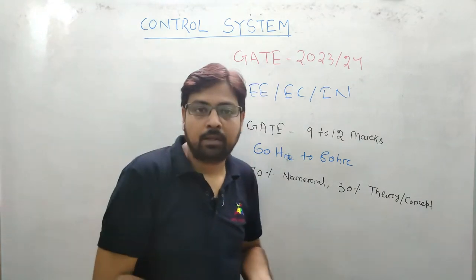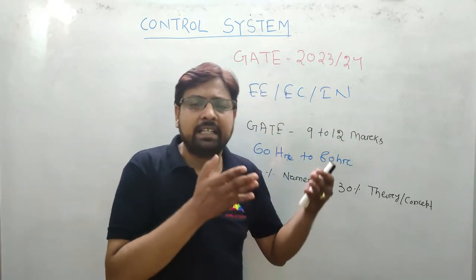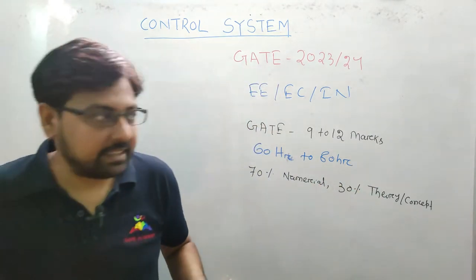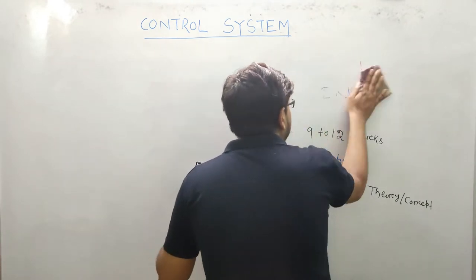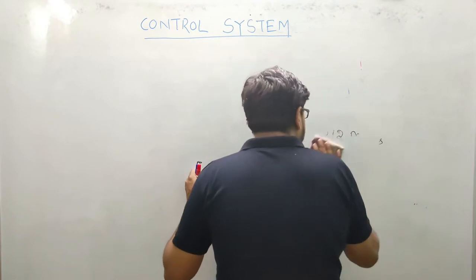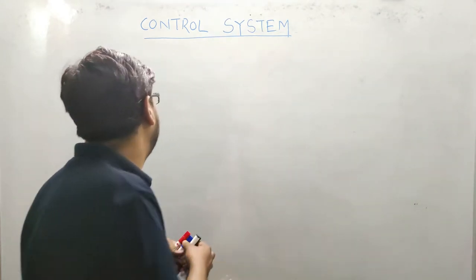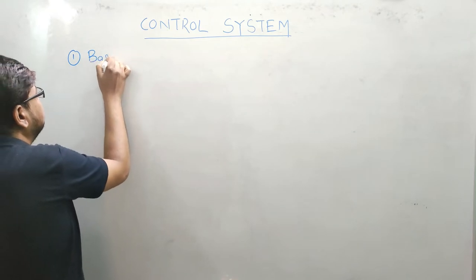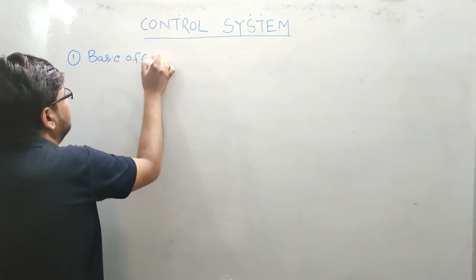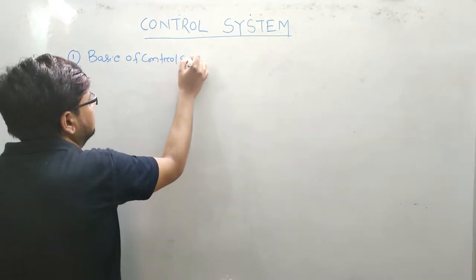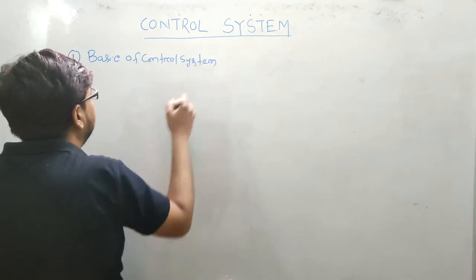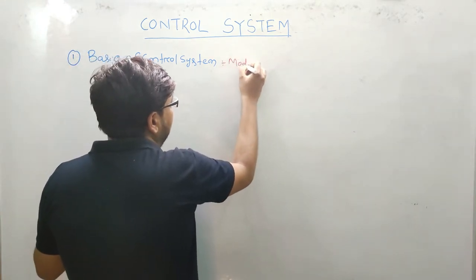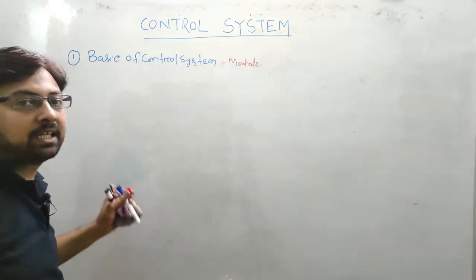तो उसके बाद चलेंगे - देखते हैं इस Control System का GATE के लिए क्या syllabus है और उसको हम कितने module में खत्म करेंगे. तो अगर syllabus की बात करें, तो Control System में पहला chapter है मेरा Basic of Control System. तो number 1 है - Basic of Control System. उसको हम लोग Module 1 देंगे. Module 1 में हम लोग पूरा basic discussion करेंगे Control System का.